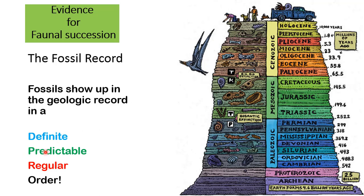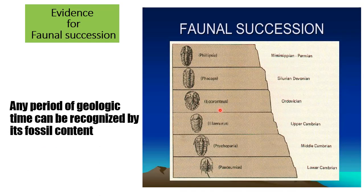This is a definite, predictable, regular order that always exists. Because of this, any period of geologic time can be recognized by its fossil content. So if we find this fossil, we know that age of rock must be in the lower Cambrian period. If we find this fossil, we know the age of the rock is in the Ordovician period.